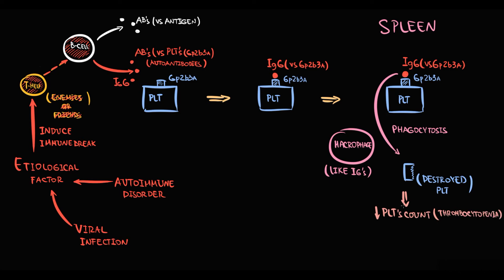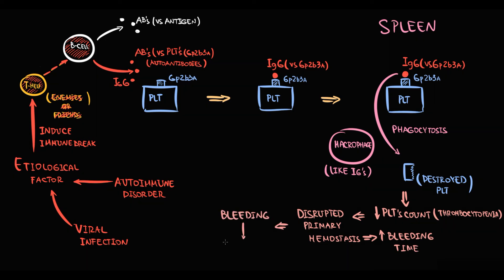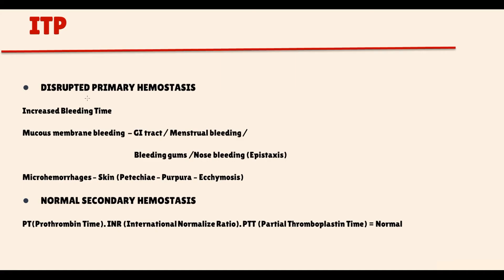Decreasing platelet count disrupts primary hemostasis because without platelets a platelet plug cannot be formed. Disruption of primary hemostasis can be diagnosed by prolongation of bleeding time. Disruption of primary hemostasis manifests with typical symptoms including bleeding and purpura — the so-called mucosal type of bleeding. Patients have prolonged bleeding time; after cuts, bleeding lasts longer than normal.